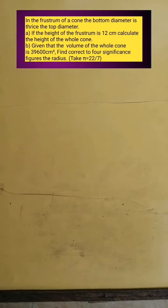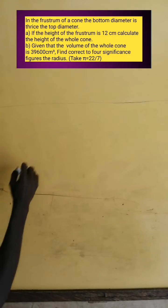In the frustum of a cone, the bottom diameter is thrice the top diameter. Let's use this information to answer A and P. How do we do this? Okay, so let's draw the frustum.